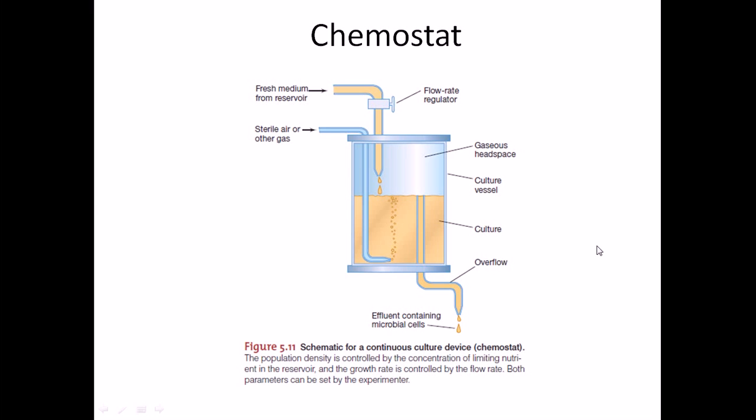Welcome back friends, let's talk a little bit about chemostat. Now, chemostat as you all know is a machinery which is used for maintaining a continuous culture. For understanding chemostat, you must know what is a continuous culture.